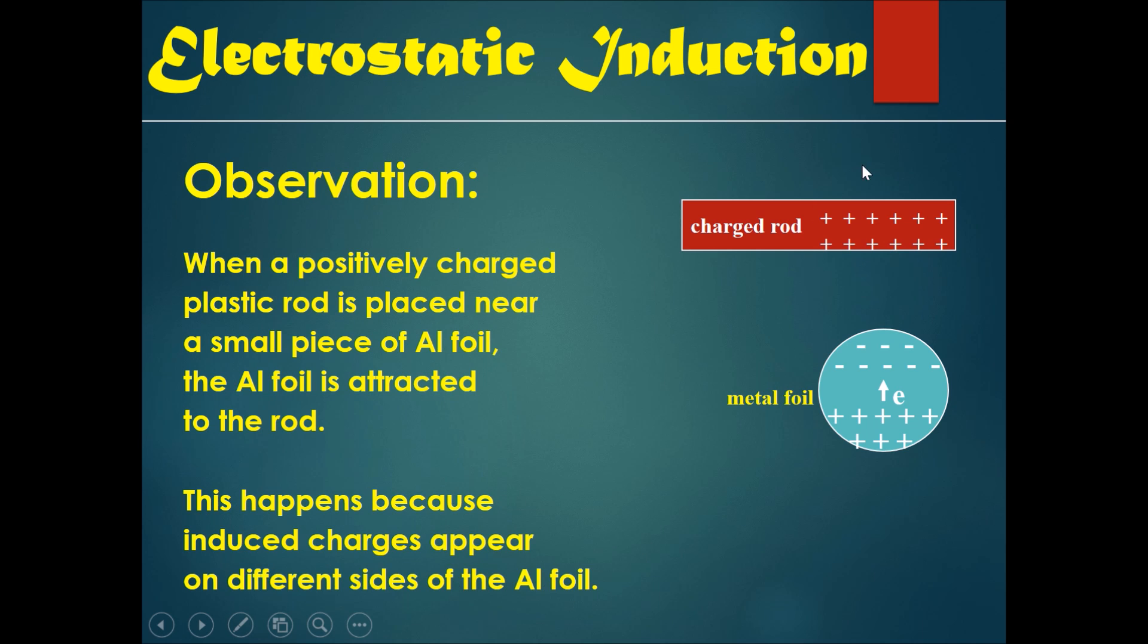Because there are positive charges on the charged rod, the electrons on the aluminum foil gravitate towards the site nearest to the positive charge rod. This leaves behind the protons on the other side of the metal foil. Therefore, the metal foil becomes slightly polarized—negative on one side and positive on the other.